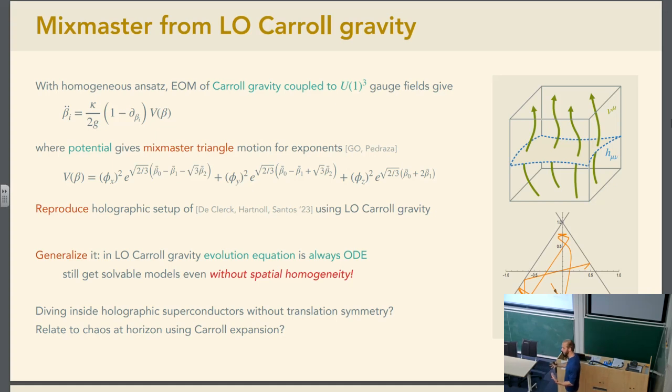If we take some spatially homogeneous ansatz, we again get a potential for the dynamics of the scaling exponents, which if we solve this ODE numerically, gives you exactly this dynamics that we saw before from the holographic model. So we've reproduced the holographic setup, but why should we do this? The key thing is that this evolution equation is an ODE to begin with. That doesn't depend on the fact that the spatial metric was assumed to be homogeneous. Using these Carroll models, we can study spatially inhomogeneous models and obtain a solvable set of equations where you can allow the metric exponents to vary over space.